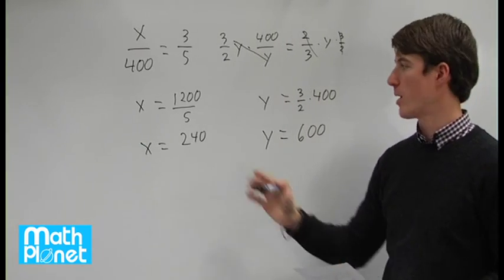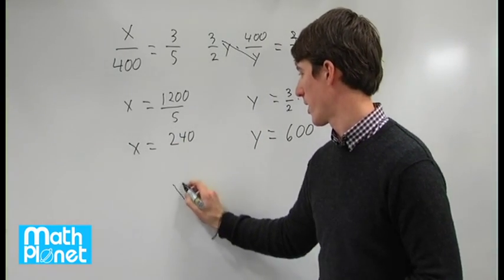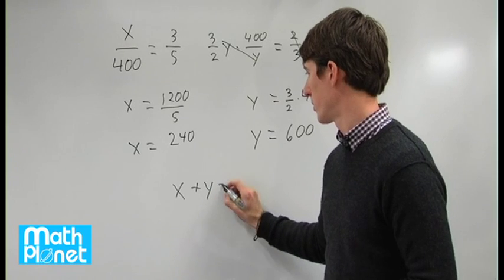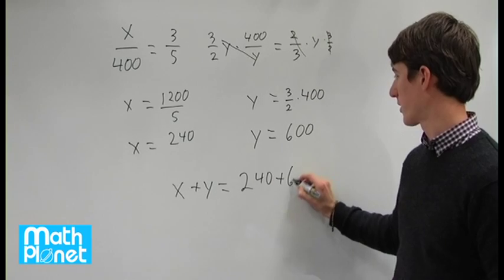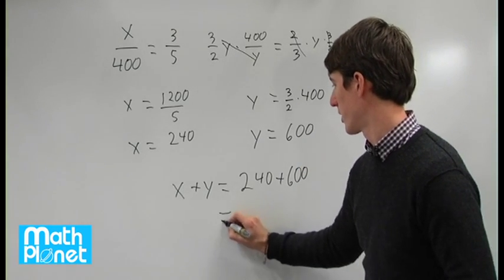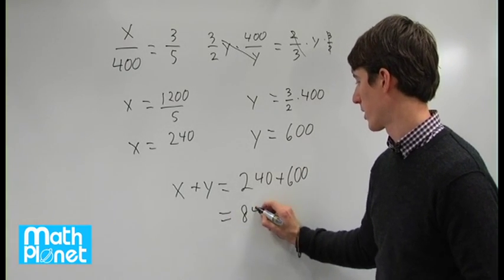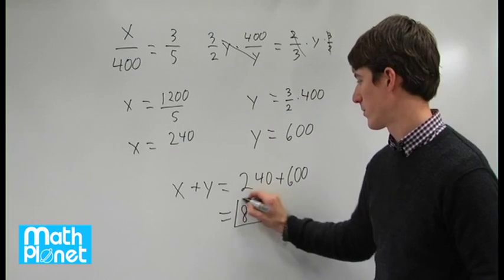And now we just want to find the sum of x plus y. So x plus y, which is equal to 240 plus 600, which is equal to 840. And that's our answer.